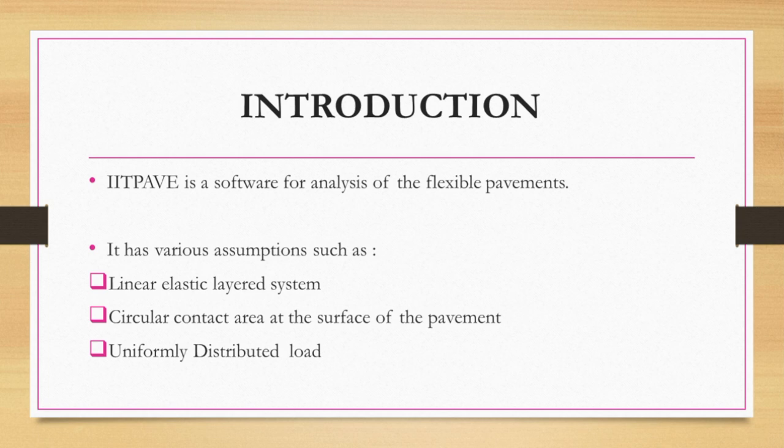IIT PAVE works with various assumptions, such as the pavement being considered a linear elastic system. What does linear elastic layered system mean? Layered system refers to the different types of layers in the pavement, such as BC (bituminous course), DBM, WMM, GSB, and subgrade.